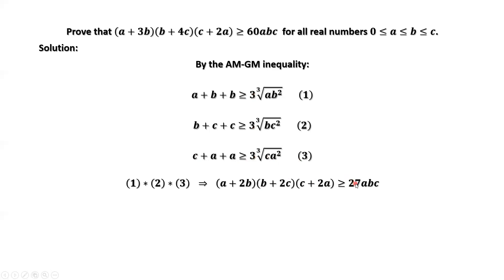Here you can see the third root of a times a² equals a³. b² times b is b³. c² times c equals c³. Therefore, the right-hand side is 27abc.